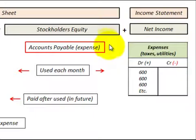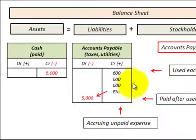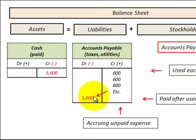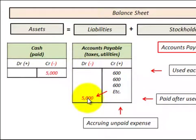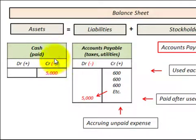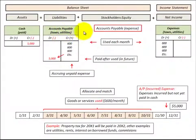Remember that this expense flows out of the net income on the income statement, gets closed to retained earnings, which is part of stockholders' equity on the balance sheet. Now after we've used these goods and services, sometime afterwards we've paid for them. By paying for them, we debit or decrease the accounts payable — in this case $5,000 — and the corresponding entry would be to credit $5,000 or reduce our cash account by $5,000. Remember that cash is an asset on the balance sheet.